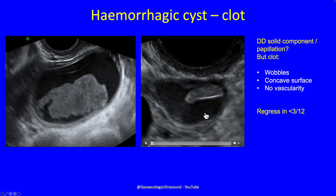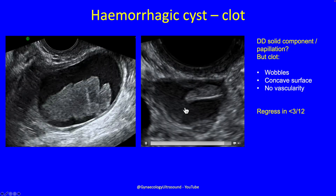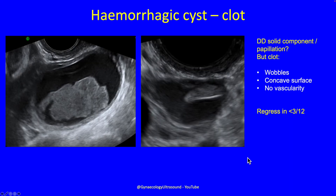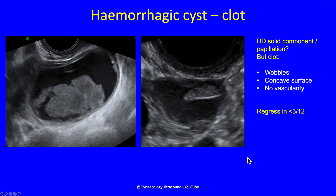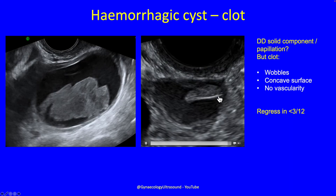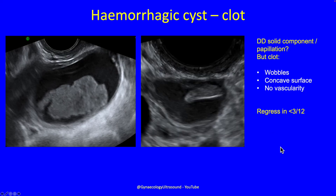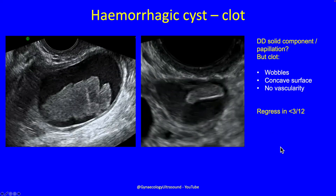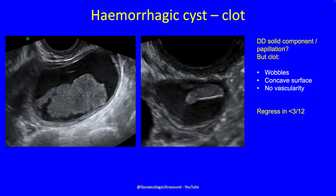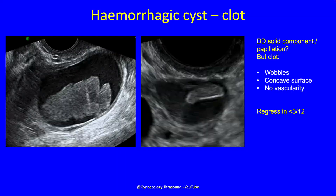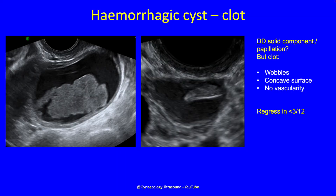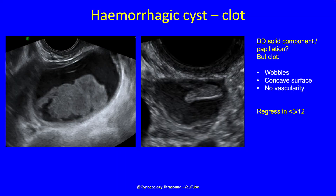In this second example, you can see a concave surface and some calcification with shadowing. A papillation or solid component wouldn't have a concave surface, so you can say these are clots. Also, these would regress in about three months' time, so if you weren't sure and you re-scanned, it would have disappeared by the second scan.